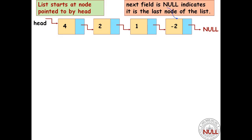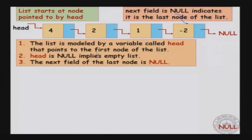The fact that the next field is null indicates that node is the last in the linked list. A linked list is always identified by its head, which is the pointer to the first node. Once we reach the first node, we can traverse the list using just the next links. If the head is null, that means the list is empty. When we reach a node with the next field null, that is the last node.